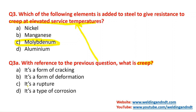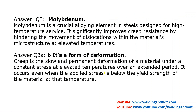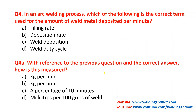The options are: it's a form of cracking, a form of deformation, a rupture, or a type of corrosion. Option B is most appropriate — creep is a form of deformation. Creep occurs when a material is subjected to loading at elevated temperature over an extended period — years or longer. The load need not exceed the yield strength, but sustained loading at elevated temperature leads to deformation and finally failure. Option B is correct.